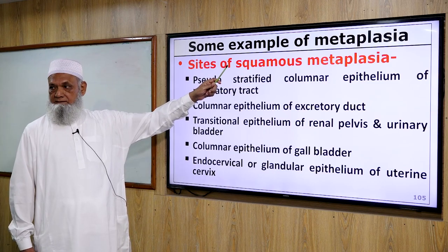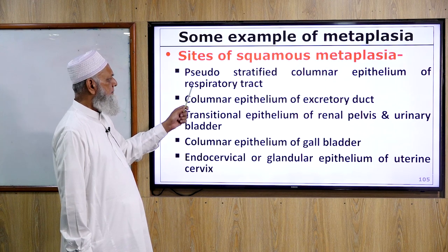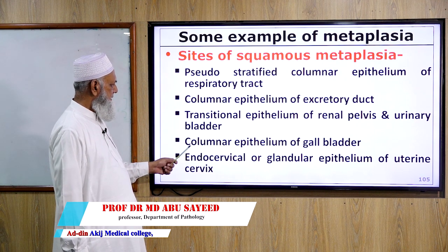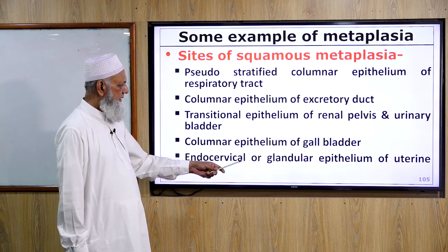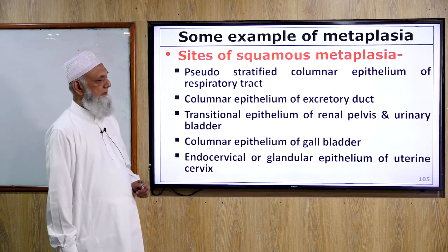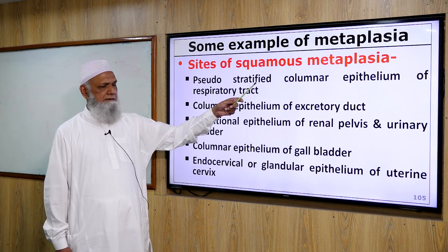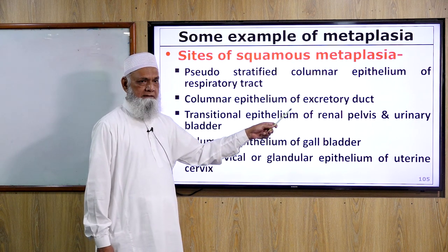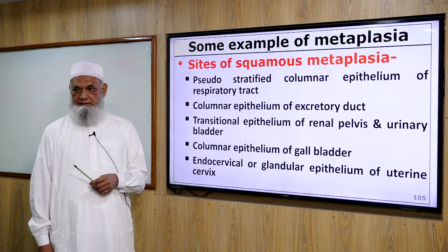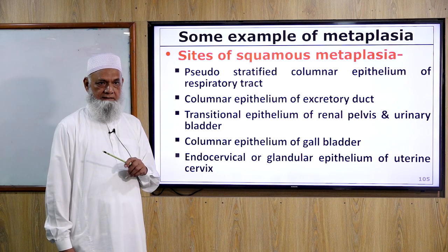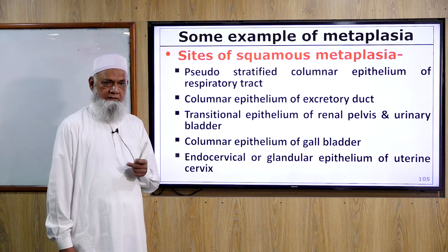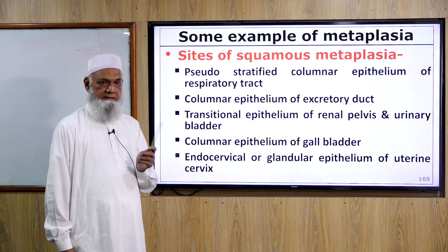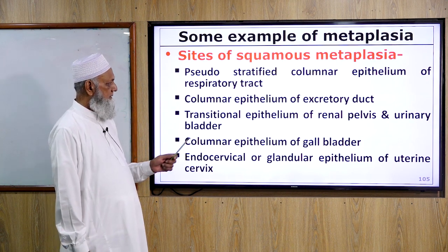Sites of squamous metaplasia include: pseudostratified columnar epithelium of the respiratory tract, columnar epithelium of the excretory duct, transitional epithelium of the renal pelvis and urinary bladder, columnar epithelium of the gallbladder, and endocervical or glandular epithelium of the uterine cervix. When these undergo continuous irritation or chronic inflammation, the columnar epithelium is replaced by squamous epithelium — called squamous metaplasia. This includes the excretory ducts of salivary glands, pancreas, and other exocrine glands lined by columnar epithelium.